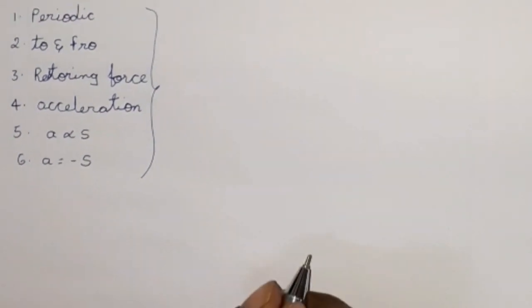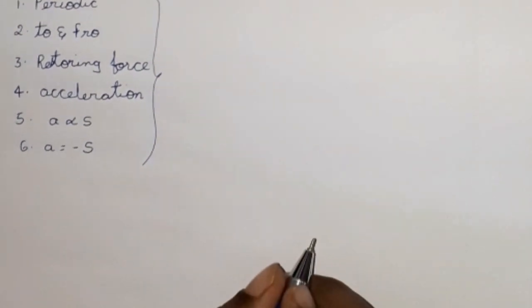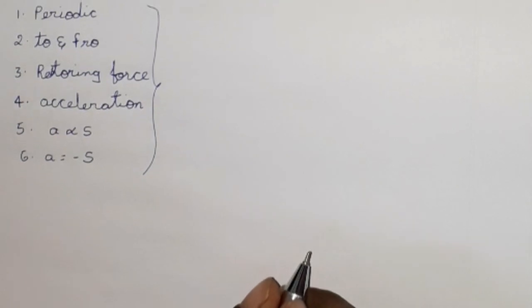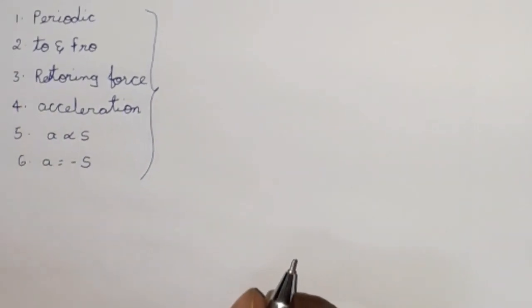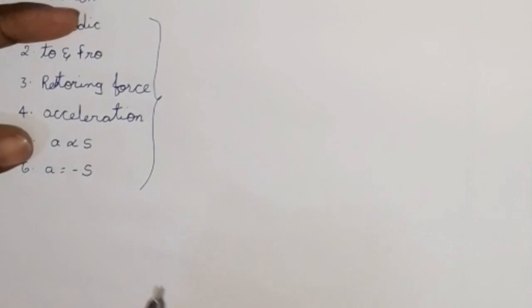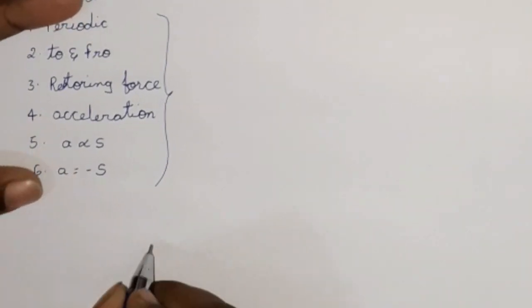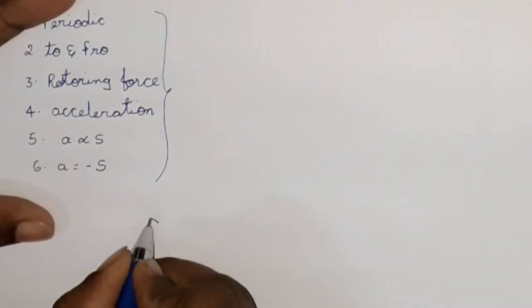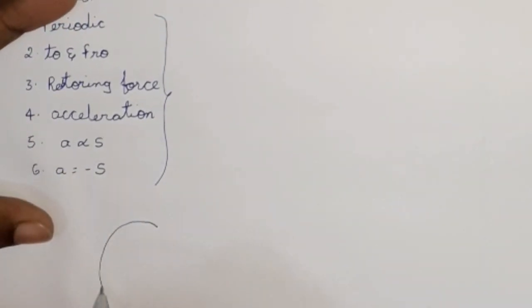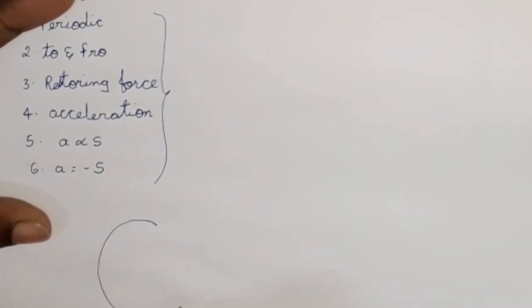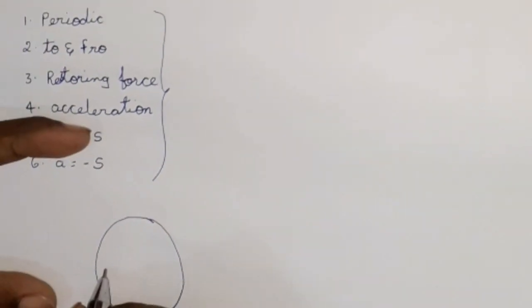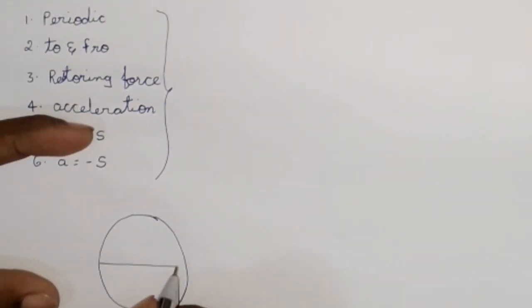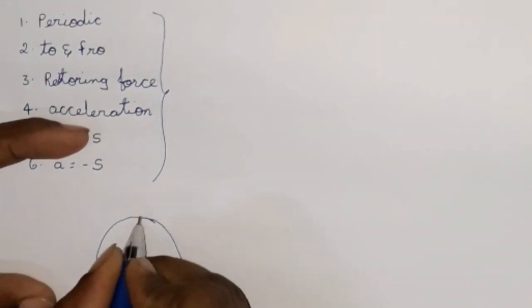Now we will see simple harmonic motion in relation to a circular path. We consider a circular path with four quadrants: X, Y, X dash, Y dash.